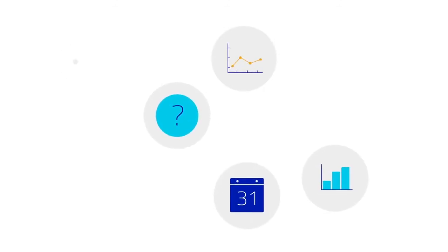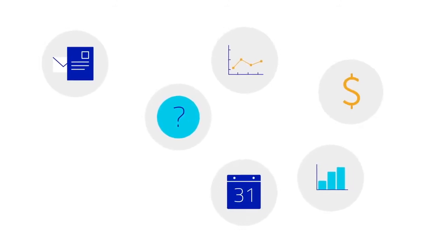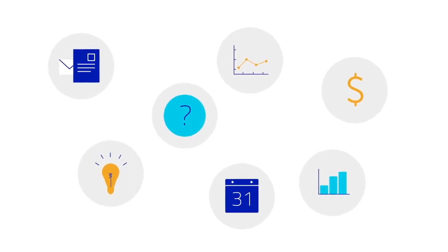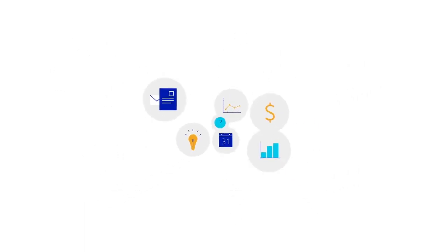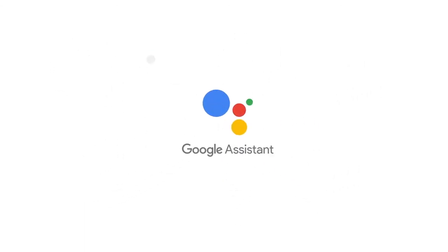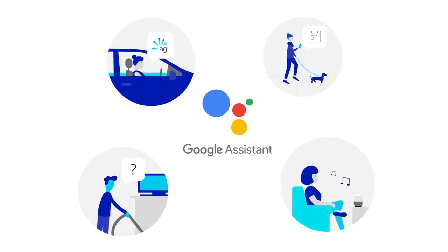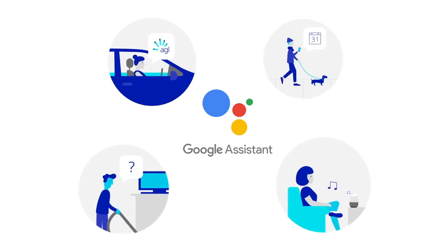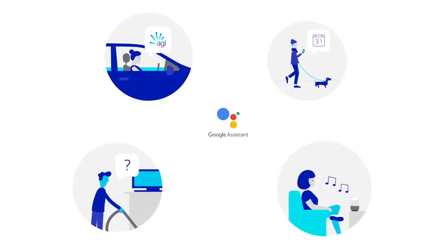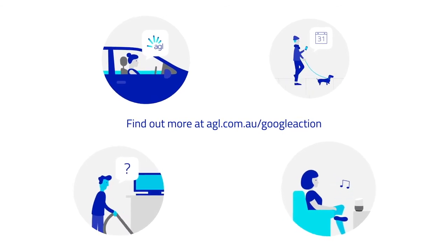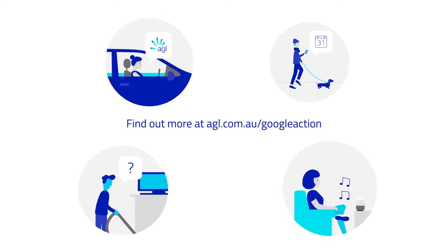We're continually adding new features and enhancing the service to help you manage your energy better. So keep checking back to see what else you can do. Link your AGL account to the Google Assistant today and start talking to AGL. Find out more at agl.com.au/Google-action.